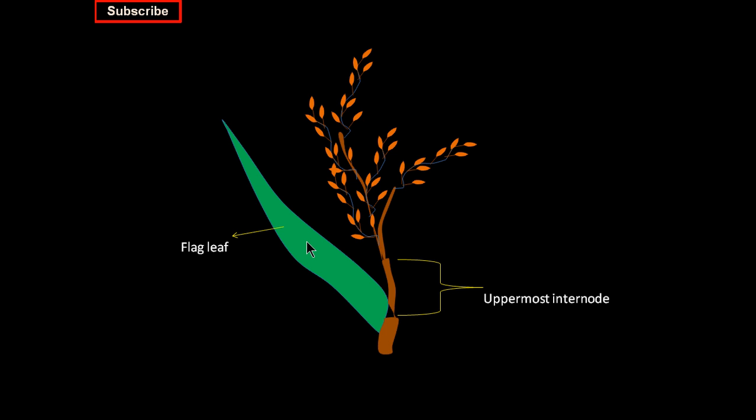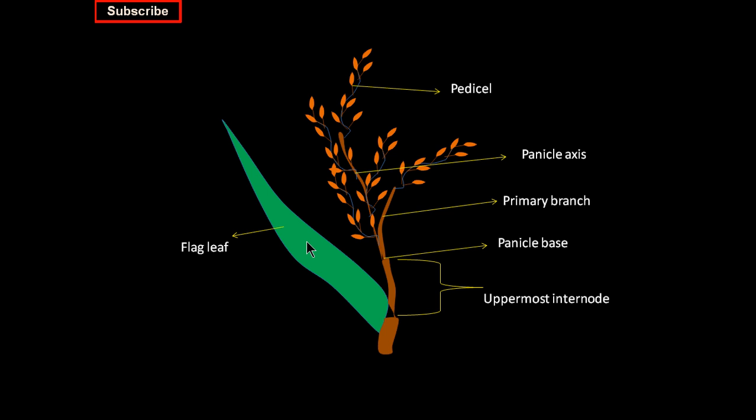The panicle will be attached at the uppermost internode, and the point where the panicle is attached is called the panicle base. This panicle will have primary branches and a panicle axis. From these, secondary branches will also be there. On the secondary branches, there will be pedicels, and on the pedicels, spikelets will be attached.